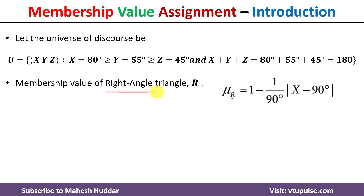Next is the membership value of the right angle triangle — fuzzy set R. The membership value of fuzzy set R is always equivalent to 1 minus (1 divided by 90 degrees) multiplied by the absolute difference of (x minus 90 degrees), where x is the maximum angle, equivalent to 80 degrees.